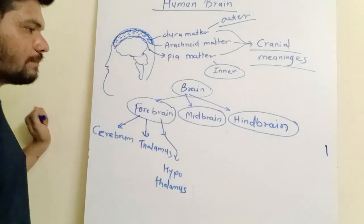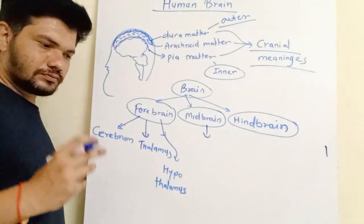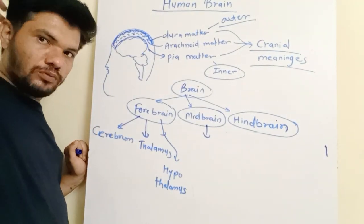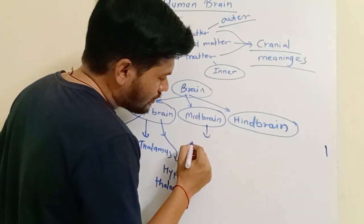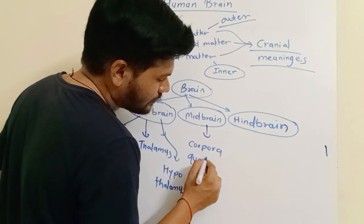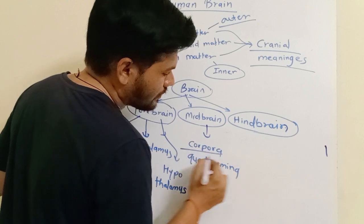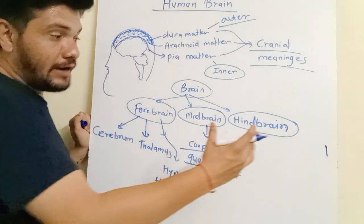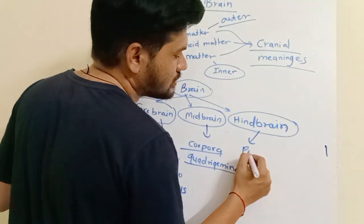Then your midbrain has four lobe structures present on the dorsal side called corpora quadrigemina. And then hindbrain is again divided into three different parts which is pons, medulla, and cerebellum.